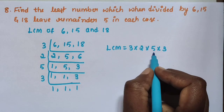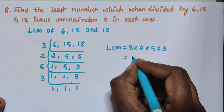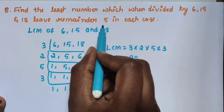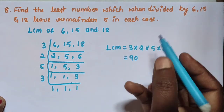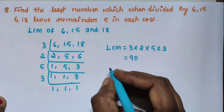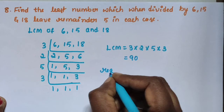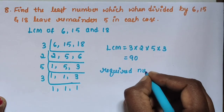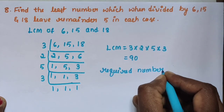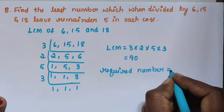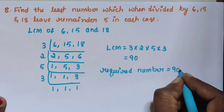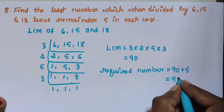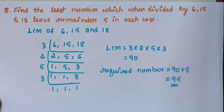Then LCM is equal to 3 × 2 × 5 × 3. Computing: 3 × 2 = 6, 6 × 5 = 30, 30 × 3 = 90. Since the remainder is 5 in each case, add 5. Then the required number is 90 + 5 = 95. The answer is 95.